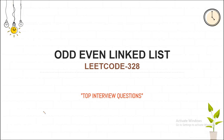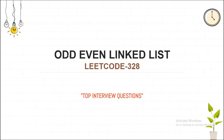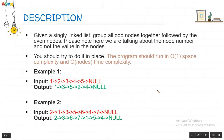Hello guys, today we will be solving LeetCode problem number 328: Odd Even Linked List. Given a singly linked list, group all odd nodes together followed by the even nodes. Note that we are talking about the node number and not the values in the nodes. We have to arrange the linked list according to node number, and we have to do this in O(1) space complexity and O(n) time complexity.